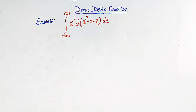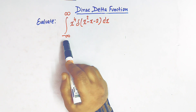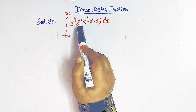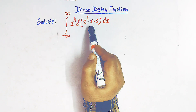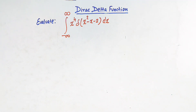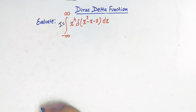Hello viewers. In today's class we are going to discuss another important problem from the Dirac delta function. We have to evaluate the integral from minus infinity to infinity of x raised to 4 times delta of (x squared minus x minus 2) dx. Let us call this integral I.